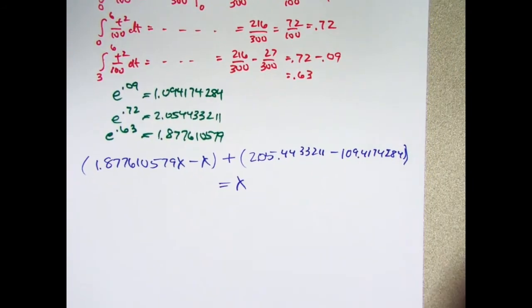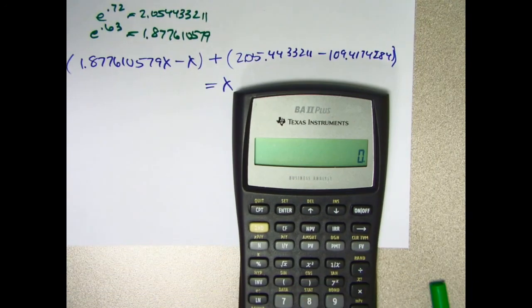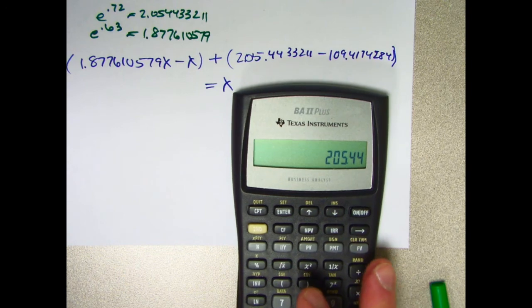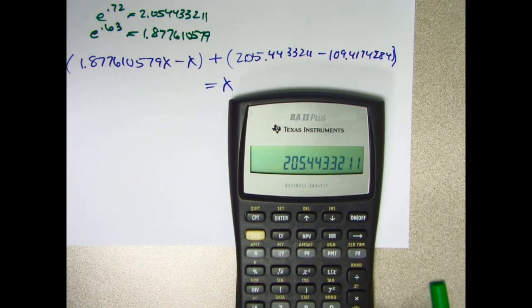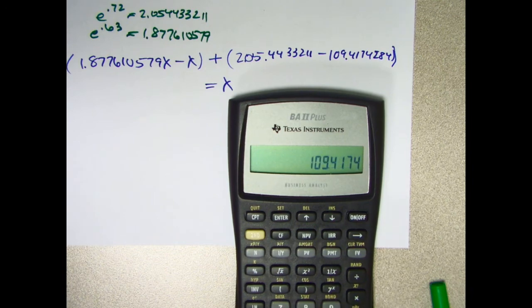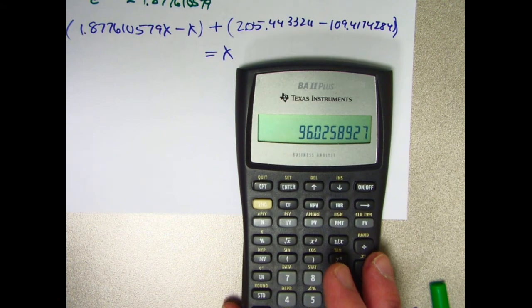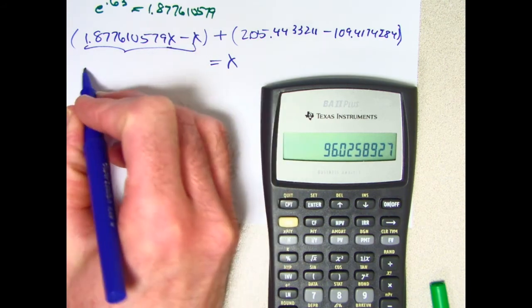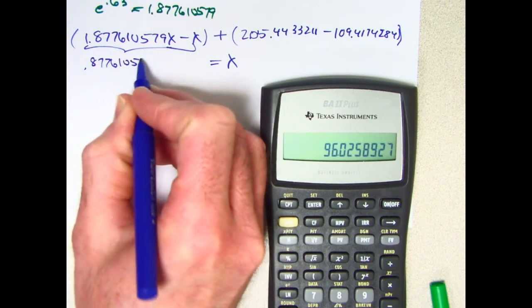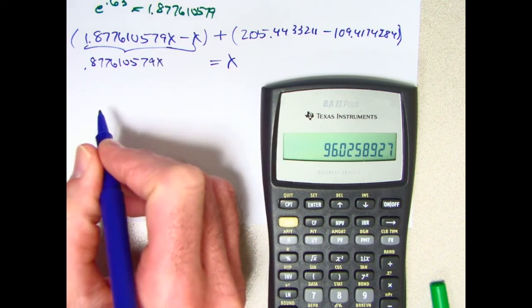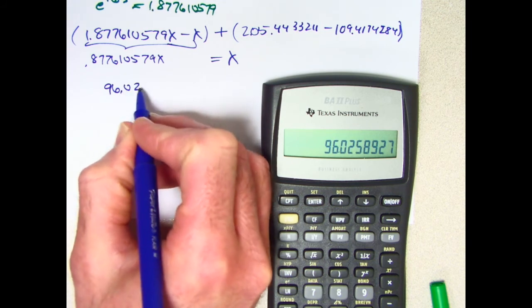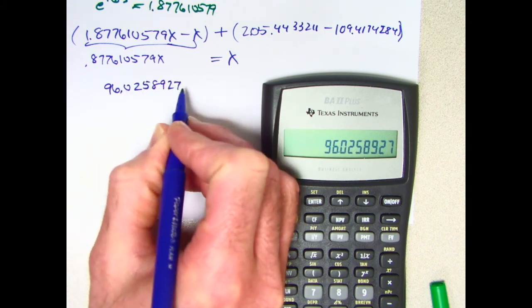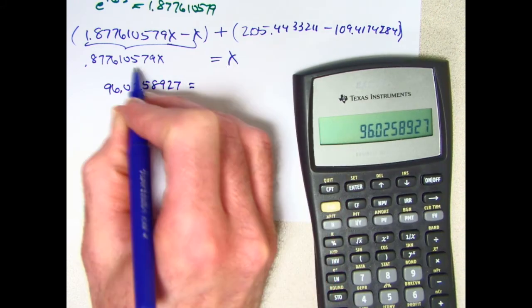This is our equation to solve for x. 205.4433211 minus 109.4174284. Gives you 96.02. This is going to be 0.877610579x. Subtract that from both sides. You're going to get 96.0258927 equals x minus that times x.